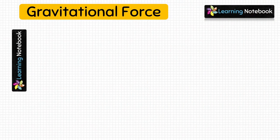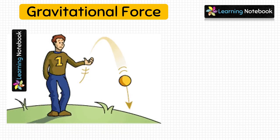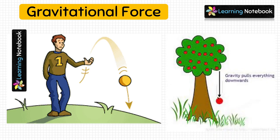The next type of force is gravitational force. You must have noticed that whenever you throw anything up in the air, it always comes down. For example, when we throw a ball up it comes down, or when a fruit is ripe it falls down from the tree. This is due to the force which the earth exerts on every object, and this type of force is called gravitational force.